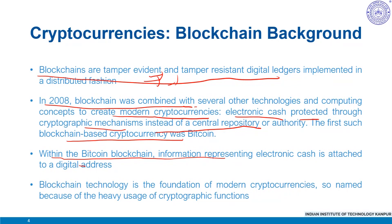The Bitcoin blockchain is stored, maintained and collaboratively managed by a distributed group of participants. This, along with certain cryptographic mechanisms, makes the Bitcoin blockchain resilient to attempts to alter the ledger — like modifying blocks, forging transactions, or duplicating transactions. What we have already discussed as the double spend problem is an example of it. Lastly, blockchain technology is the foundation of modern cryptocurrencies, so named because of the heavy usage of cryptographic functions.